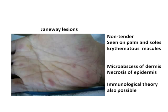It causes micro-abscesses of the dermis and results in necrosis of the epidermis, which produces that characteristic feature. An immunological theory is also being debated, but as mentioned, both Osler's nodes and Janeway lesions are relatively uncommon. Still, it is worth looking for them in a patient with prolonged fever and features of valvular regurgitation.